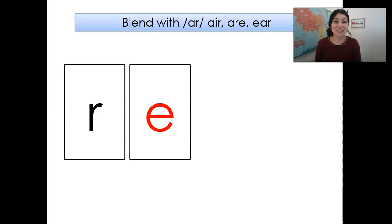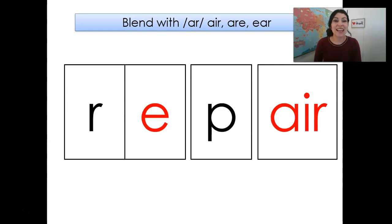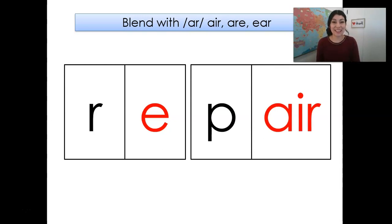Sound R, sound E, sound P, air. Ready? What's this word? Repair, good job. This is a multi-syllabic word. If we cut the vowel right here, we have RE and PAIR, two syllables.